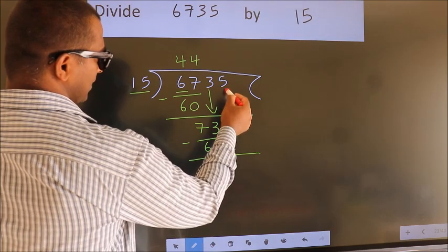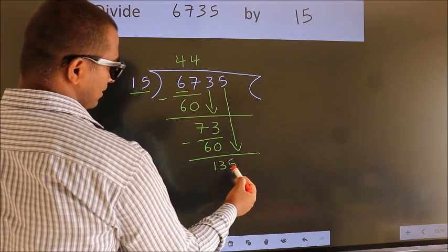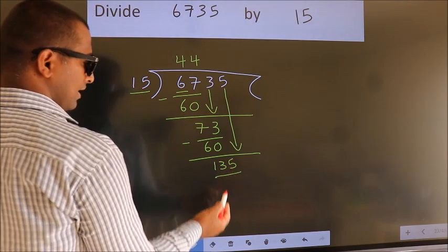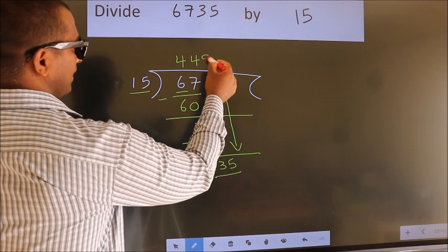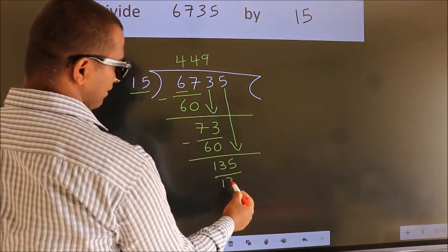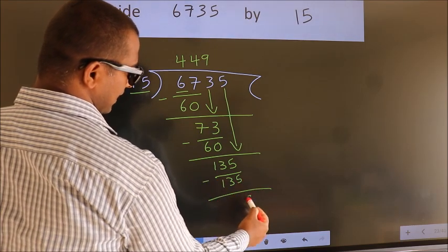After this, bring down the next number. So, 5 down, giving us 135. When do we get 135 in the 15 table? 15 nines equals 135. Now we subtract. We get 0.